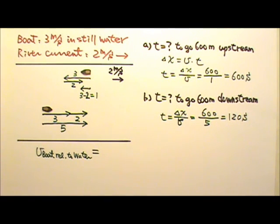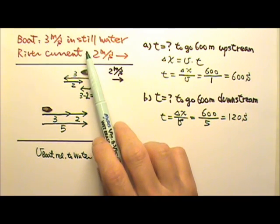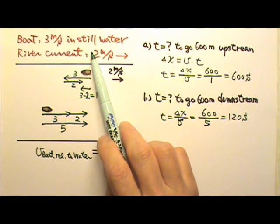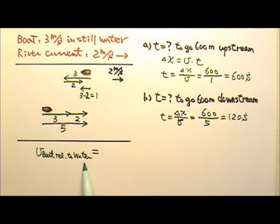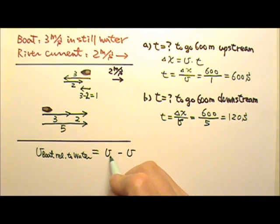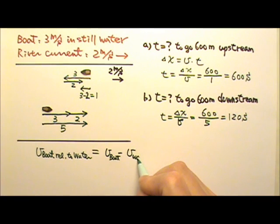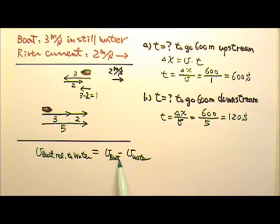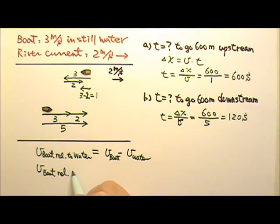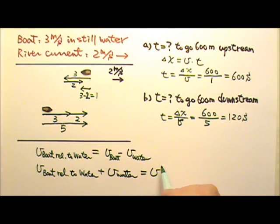In most textbooks this is explained using relative velocity, so I'll cover it quickly. The velocity of the boat in still water is the velocity of the boat relative to the water. The relative velocity is the difference in velocities — it's the velocity of the boat minus the velocity of the water, where both are measured relative to the shore. Moving that term over, the velocity of the boat relative to the water plus the velocity of the water gives us the velocity of the boat.